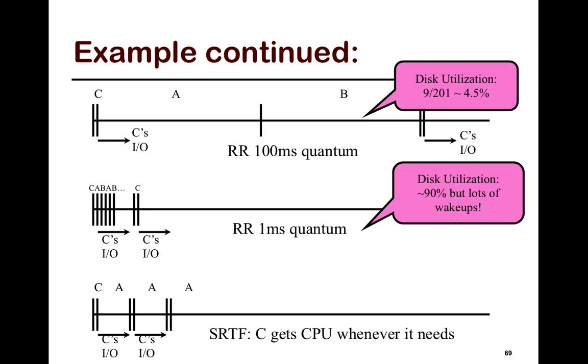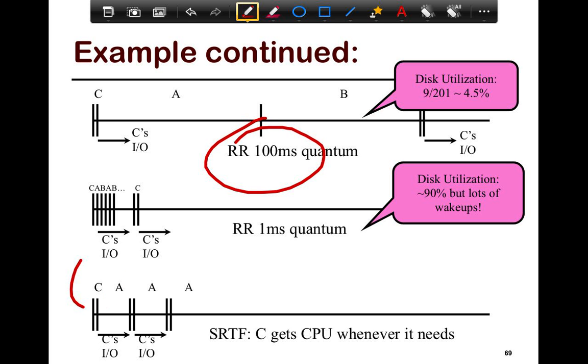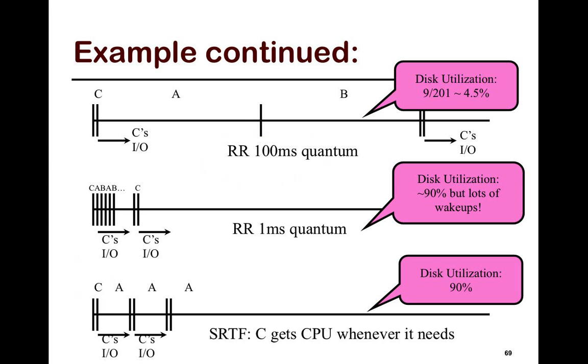What happens with shortest remaining time first is C gets the CPU whenever it needs it. Because every time when A or B is running, when C finishes up with the disk, it needs it for a millisecond. It's the shortest time amongst A and B, because each one of them is going to run for a whole week. And so if you look at the CPU burst for C, it's going to be much shorter than the CPU burst for A or B, and hence it's going to get to run. And so what happens in this case is that overall disk utilization improves, because C gets to use the CPU whenever it needs it, improving the disk utilization as well. And A or B get to run when C doesn't need it, improving their utilization as well.